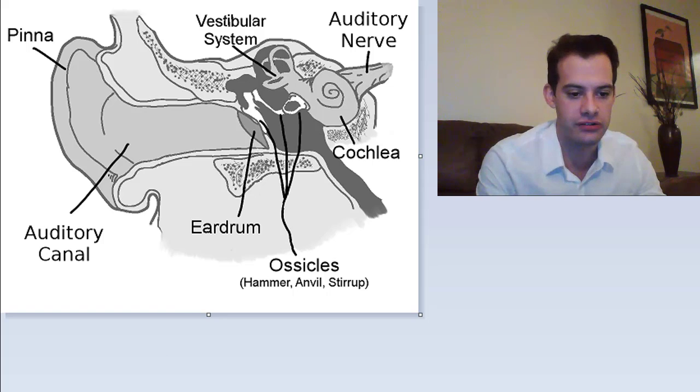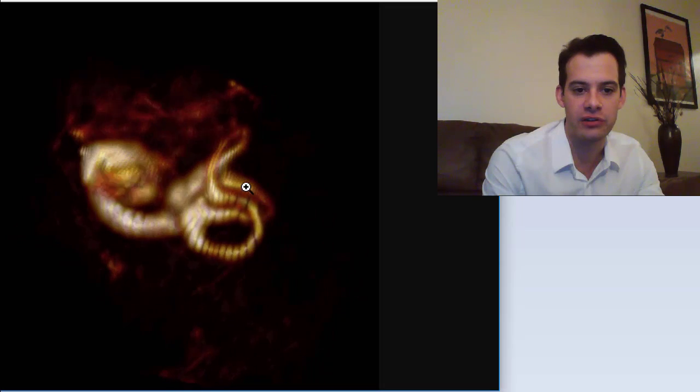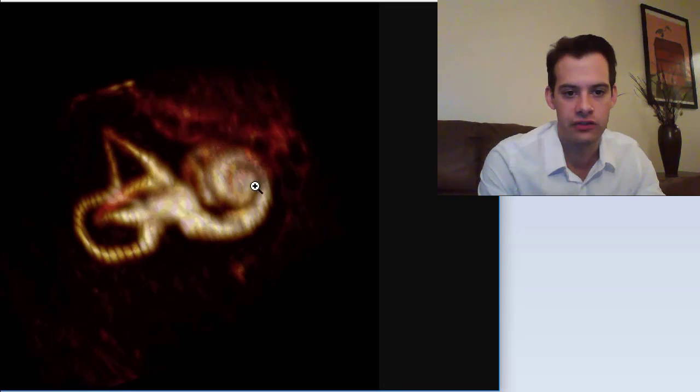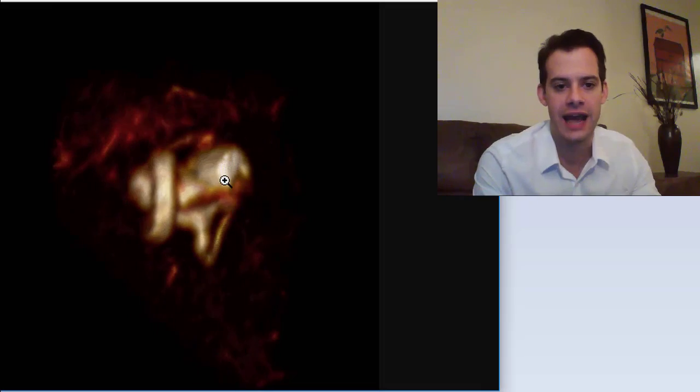Here's an MRI of your vestibular system and cochlea. Now you can see these semicircular canals pointing in different directions. This would be the cochlea curled up here, and the utricle and saccule would be there, and then the auditory nerve would go off to the brain.